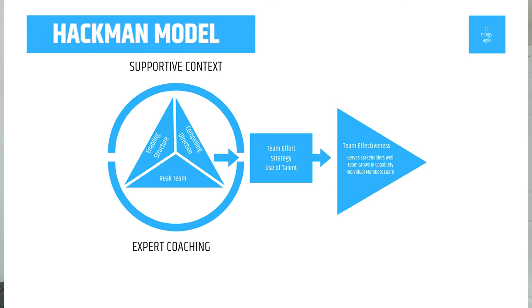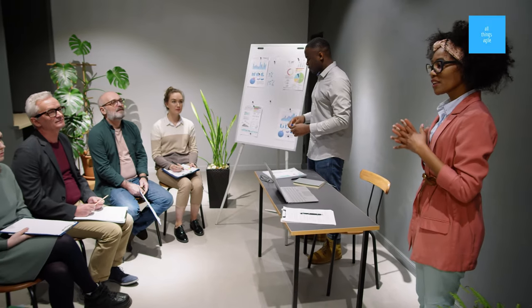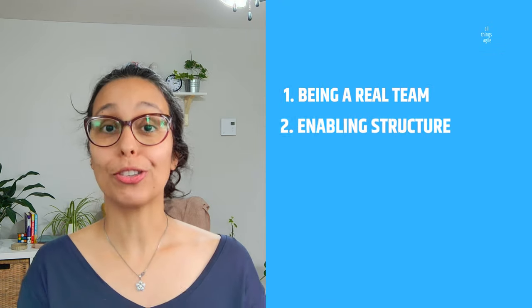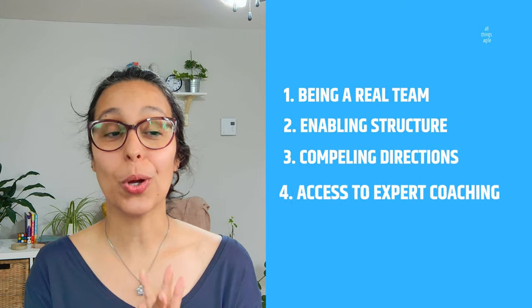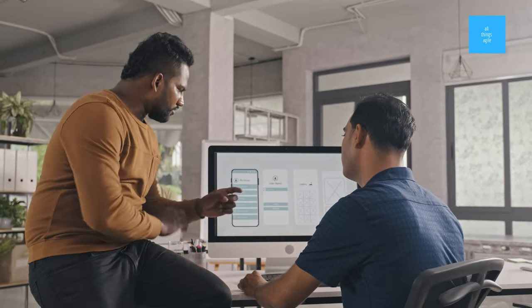The final and fifth model is the Hackman model, with five elements. I love this model because it really talks about the need for expert coaching for team success. The five elements are: being a real team, enabling structure, compelling direction, access to expert coaching, and supportive context. It looks like some of the models we already saw, but with the key flavor: do you have access to a mentor and coach when you are in need? It also implies that teams have the maturity to understand and ask for coaching when they need to get to the next level of performance.